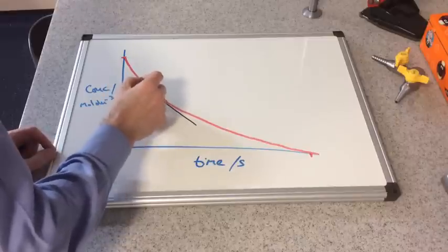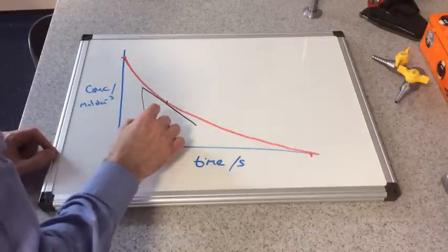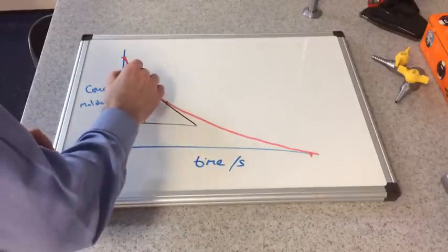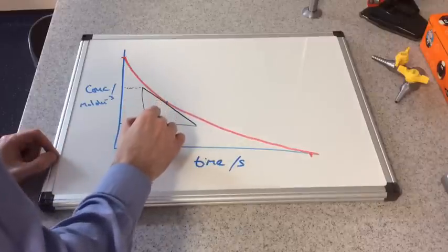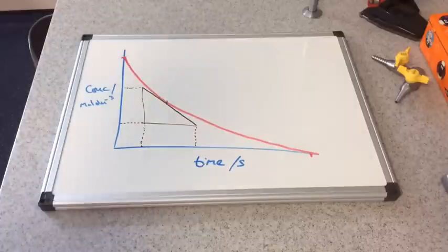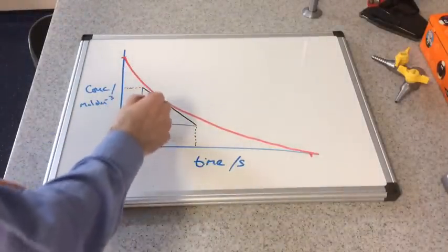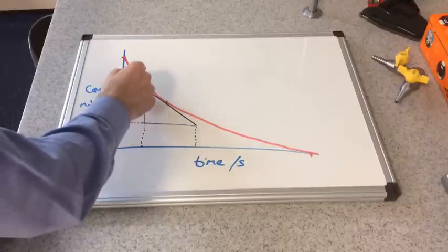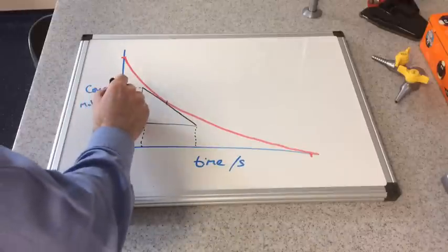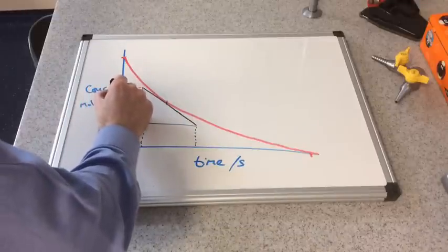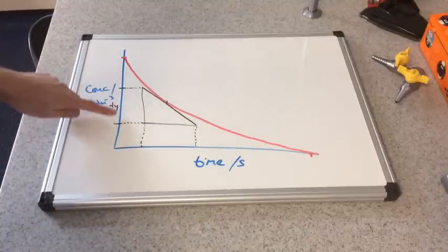So I'm sure you remember from maths how to do this. So we're going to turn it into a triangle. So we need to find the change in concentration. So it's that value there minus that value there. So I'm going to use the mathematical expression dy. So dy is the change in the y axis, the change in the y value.